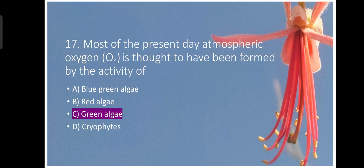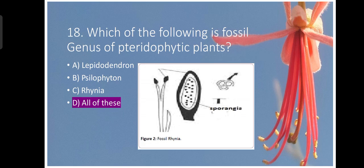Question number seventeen. Most of the present day atmospheric oxygen is thought to have been formed by the activity of green algae. Green algae is responsible for most of the oxygen produced on the earth. Which of the following is fossil genus of pteridophytic plants? They all are the fossil genus.